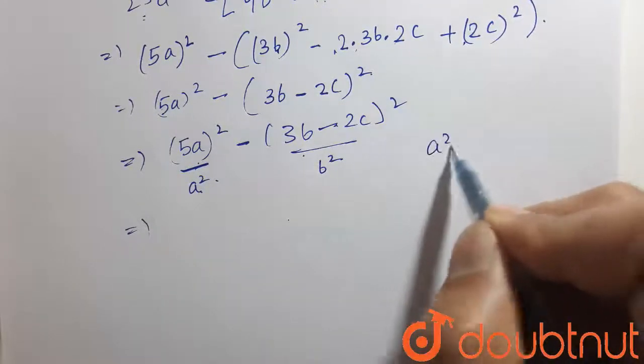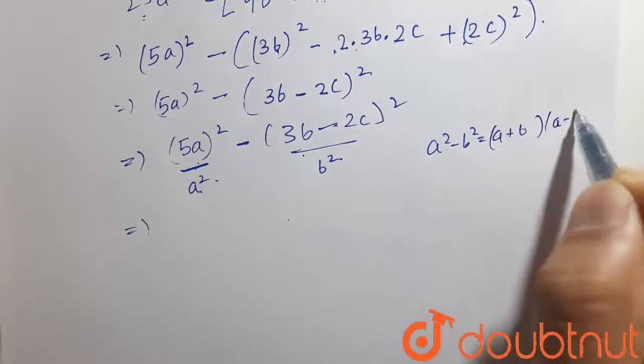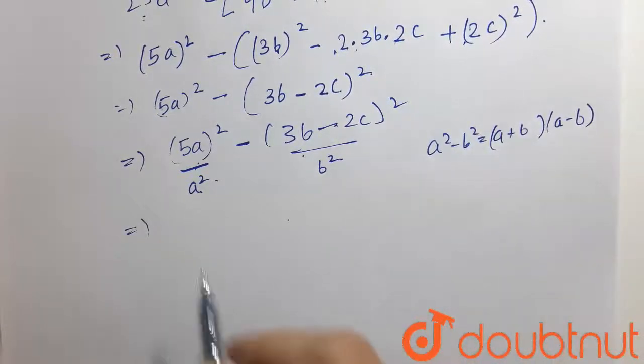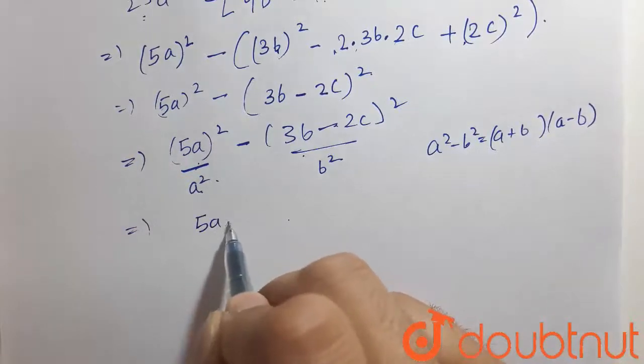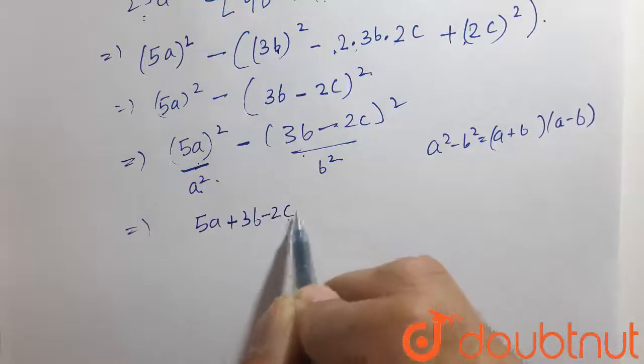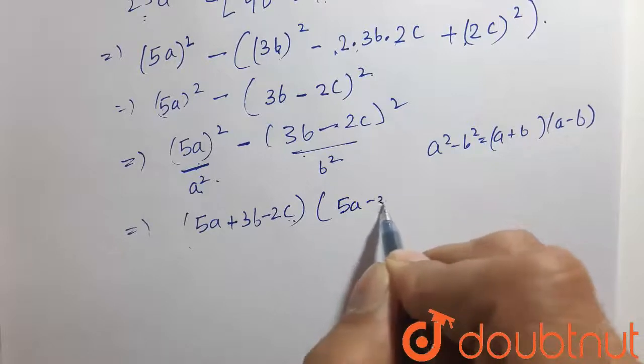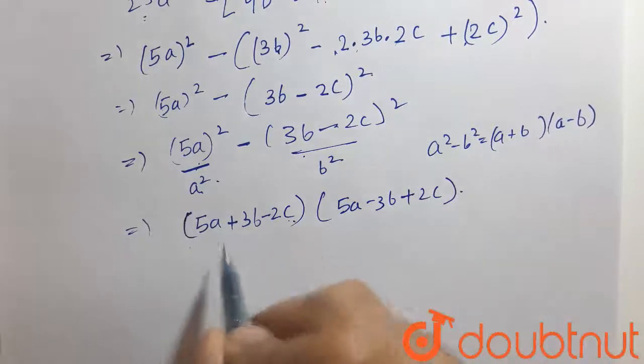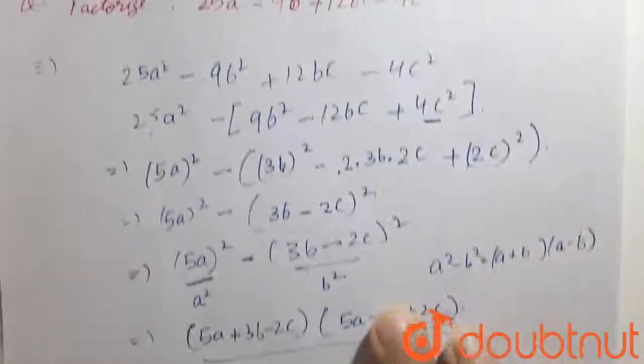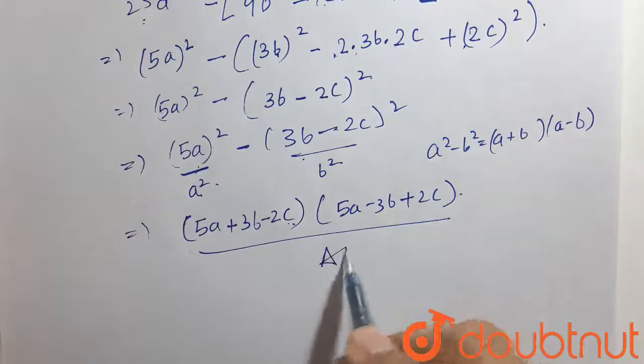Using identity of a square minus b square, that is a plus b into a minus b. So, this is equals to 5a plus 3b minus 2c into 5a minus 3b plus 2c. And this is the factorization of this. And this is our answer.